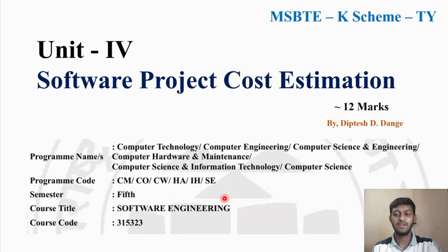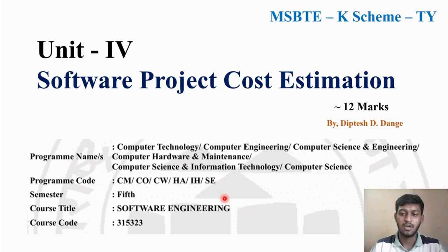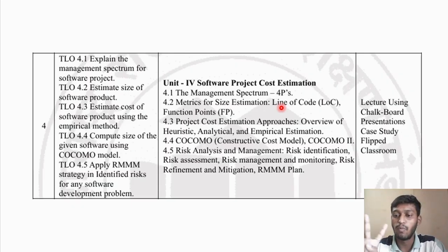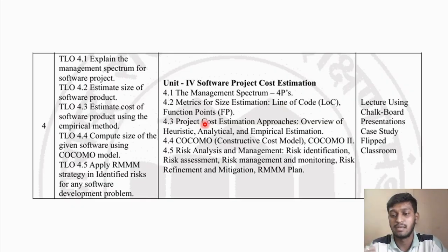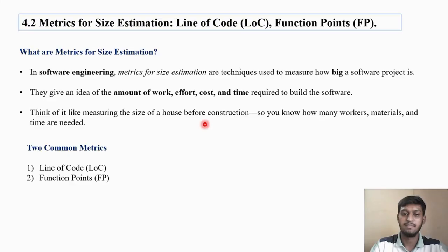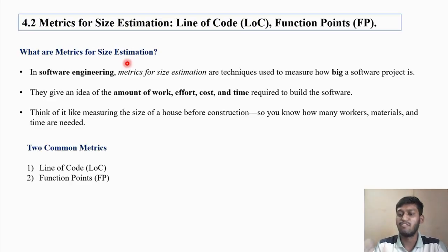Hello friends, welcome to this video. We are going to start Unit 4: Software Project Cost Estimation, which is for 12 marks. My name is Dipesh and I am teaching software engineering. Today we are going to cover point 4.2 — metrics for size estimation. There are two points: line of code and function point.